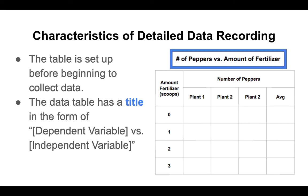The very first thing is that whenever you do this, you need to have the table set up before you begin anything. If you've got your procedure all set up, you know exactly what you're collecting and how you're collecting it. Therefore, your table should be set up so that you can just put those numbers in as you're collecting data. You shouldn't be starting the procedure and then saying, oh, I should probably make a data table — that's a bad idea.